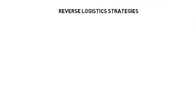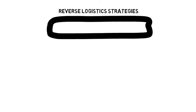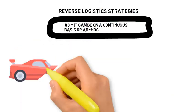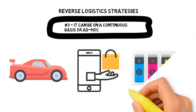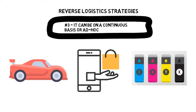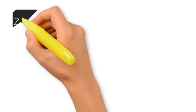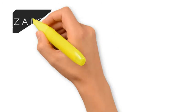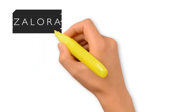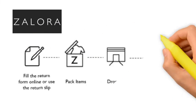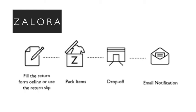Reverse logistics can be on an ad-hoc basis, like that for the asthma inhalers and recalled cars, which hopefully do not happen too often. It can also occur on a continuous basis, such as returns from e-commerce shopping websites and used printer cartridges, etc. Zalora is an example of an e-commerce business which has used their returns policy as a key selling point. It has a transport network that allows it to offer a very liberal 30-day free returns policy, which has helped to increase sales since shoppers do not have to worry about common e-commerce pain points such as sizing or exchanges.